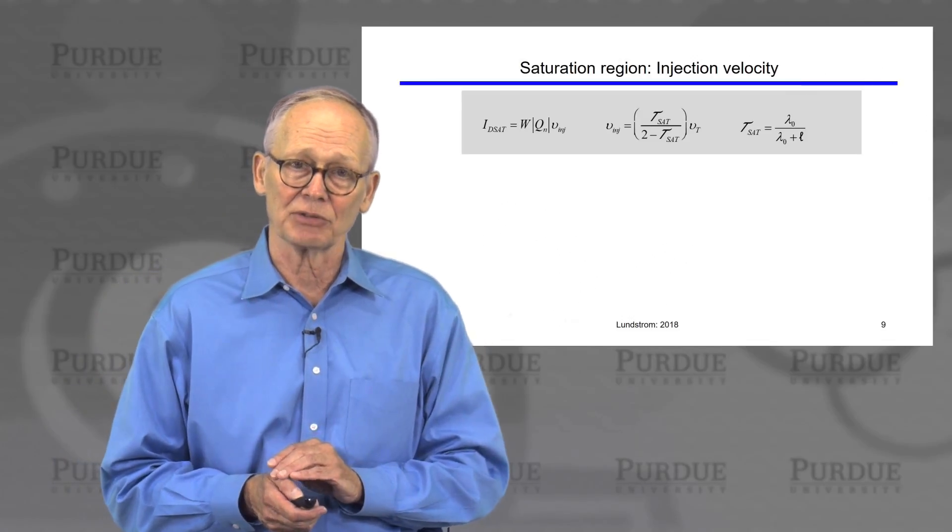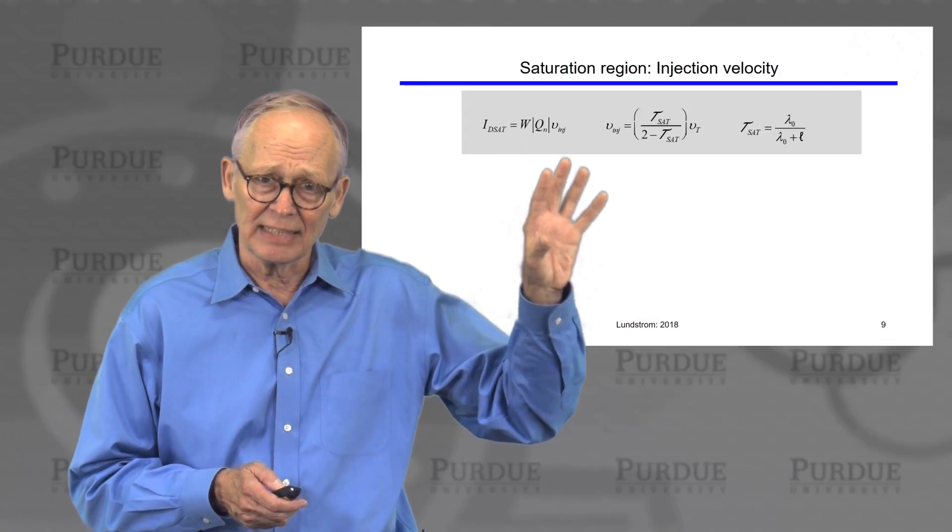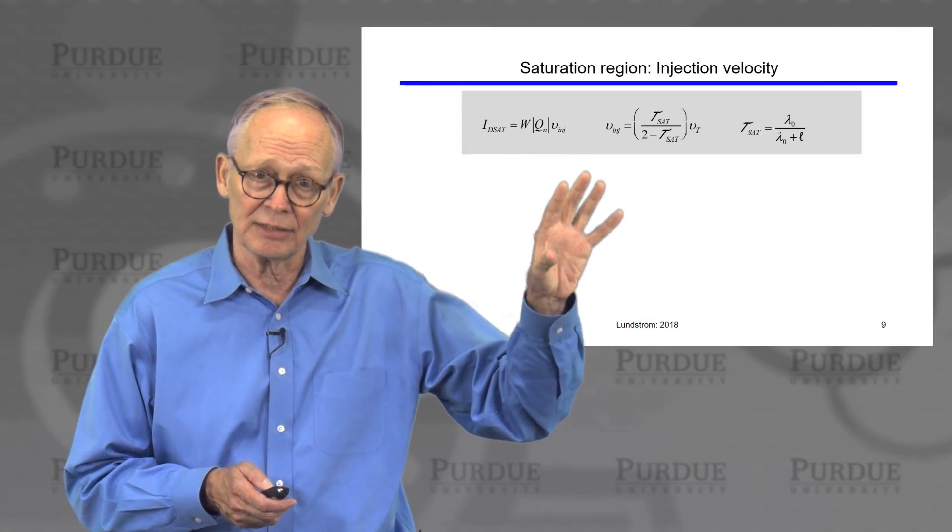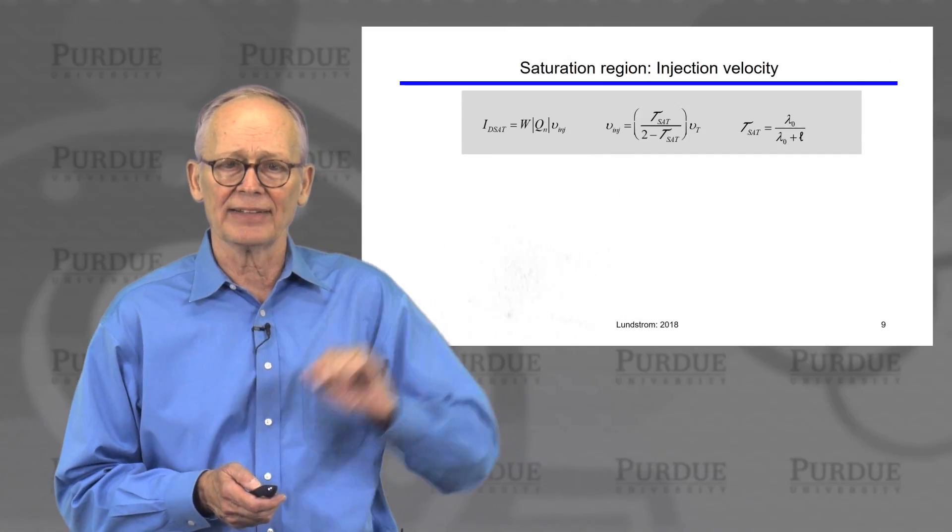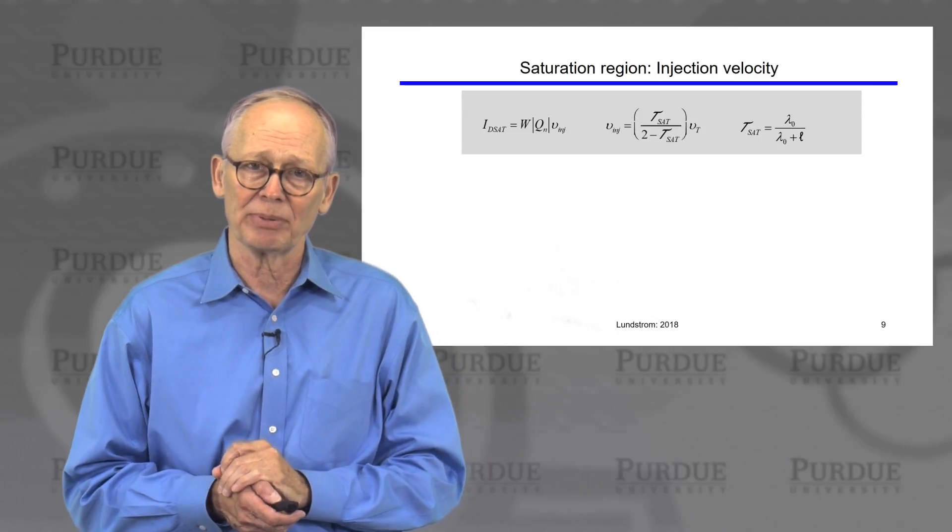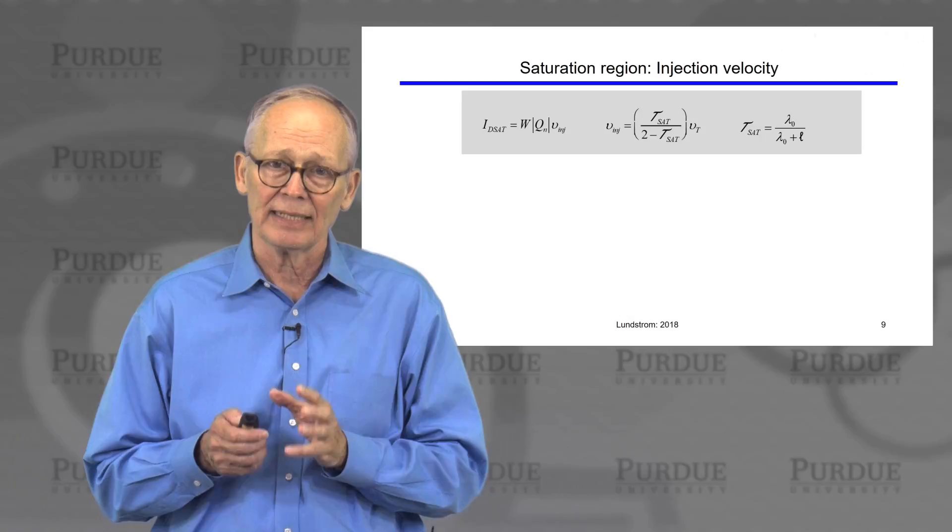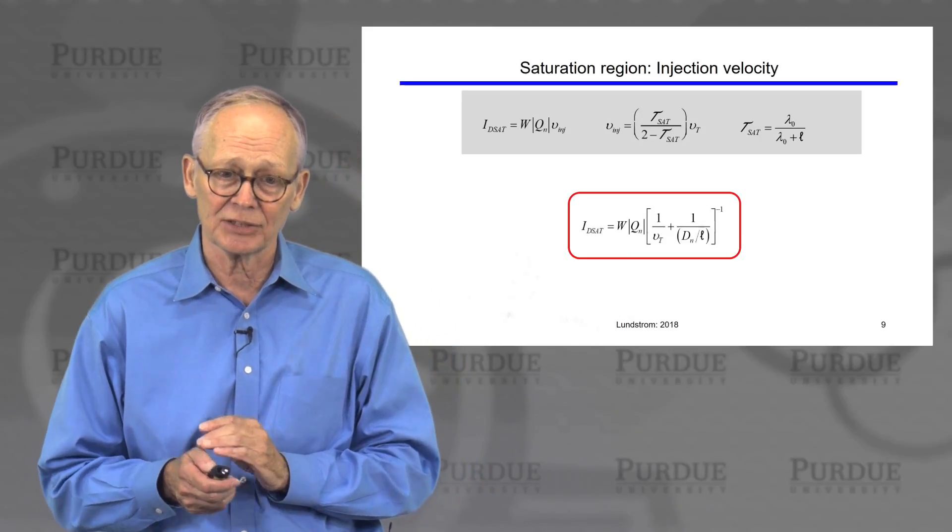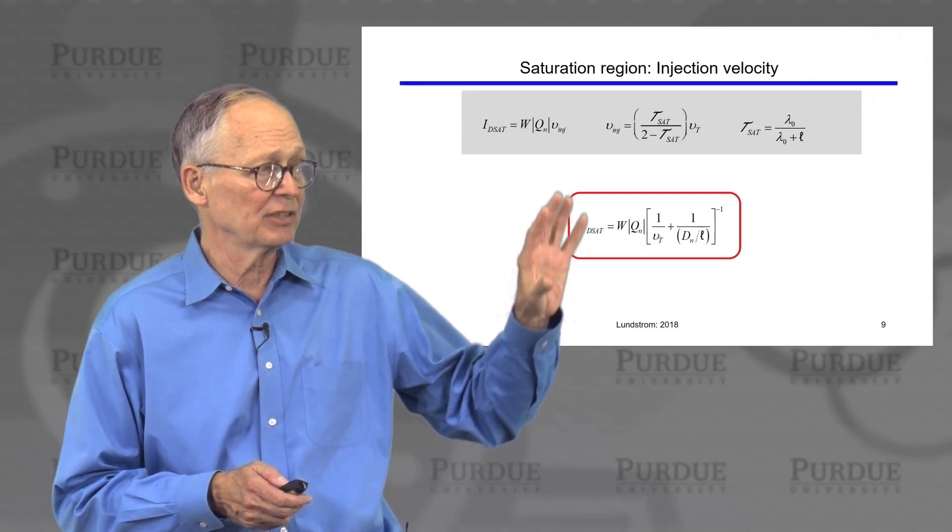Now, we also have this saturation velocity, this injection velocity which is related to the transmission under saturation conditions, and we can understand that also. Because remember, the transmission is mean free path divided by mean free path plus the length of this critical bottleneck region in the saturation bias conditions. So if we put these two together, we can rewrite this expression this way.